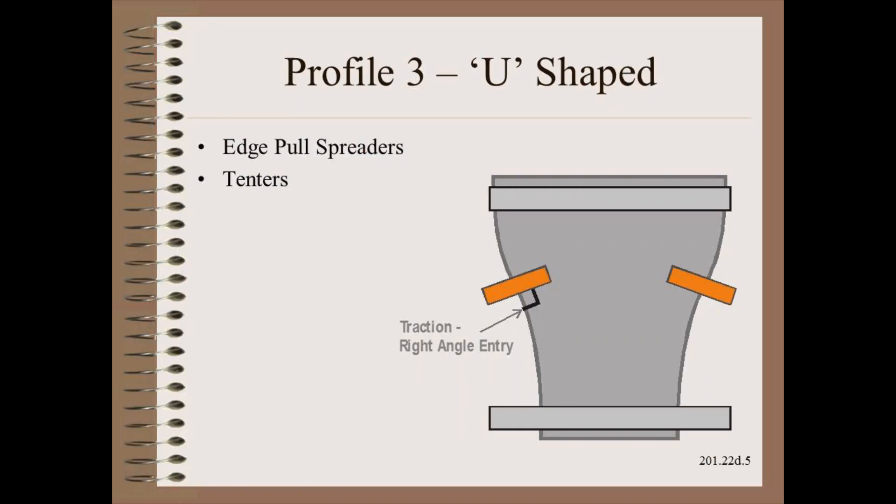The edge spool spreaders and the tenor chain both have a U-shape spreading profile once you get a bit away from the local pins, clips, or rollers.